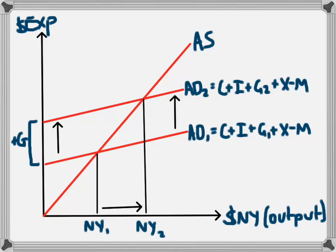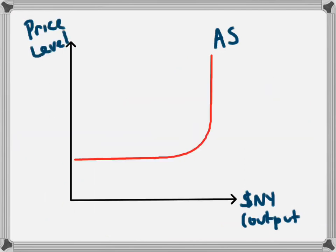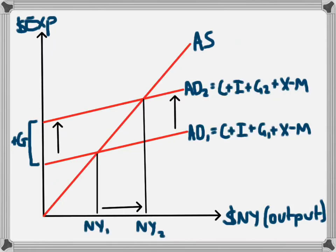This video is going to explain how expansionary and contractionary fiscal policy works on the alternative aggregate supply and aggregate demand model. We're going to look at this model, which is the alternative to this one that we're looking at here. There is a video which explains expansionary fiscal policy on the other model, which basically looks like this.